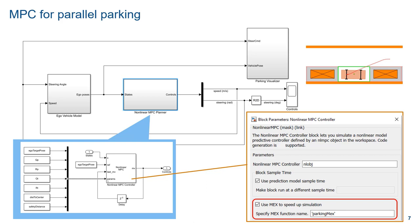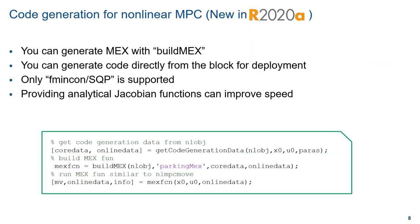In 2018, we have a new feature which lets you use a MEX file to run the controller in Simulink, which can speed up the simulation. This code generation feature is new in 2018. You can generate a MEX file using buildmex, and you can generate code directly from the nonlinear MPC controller block. Currently we only support the case when you use SQP in the fmincon solver. A good practice is that providing analytic Jacobian functions will greatly improve the speed. To build the MEX function, you can get the code generation data and then build the MEX function from the output of that function, then run it similarly to nlmpcmove.